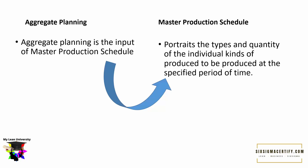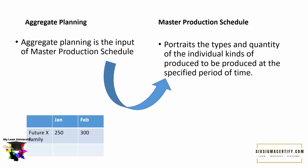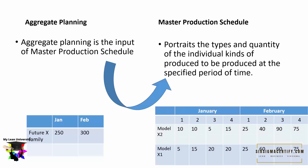The Master Production Schedule portrays individual kinds of products to be produced at a specified period of time. For example, we are trying to produce automobiles of the Future X series family. The projected demand for January is 250 and for February is 300. If we broaden this with the MPS, it breaks down into Model X1 and Model X2, both from the Future X family, with January and February each broken down into different weeks.